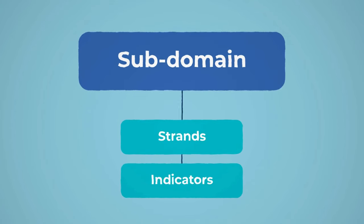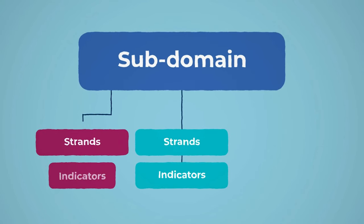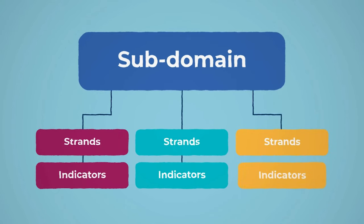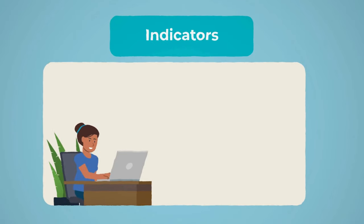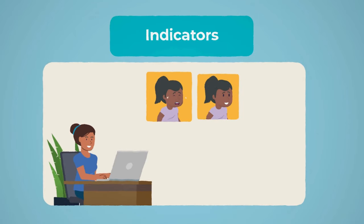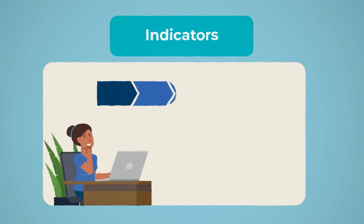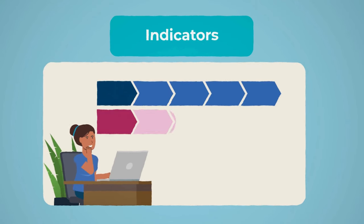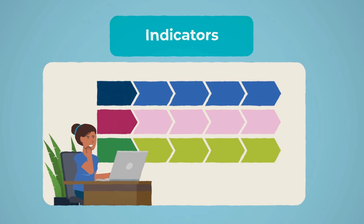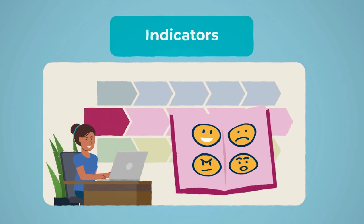Each domain includes subdomains, strands and indicators. Within each subdomain, there are three strands describing the broad capabilities that change over time as children learn and develop. Each strand includes indicators. Indicators describe what you might observe. These indicators help to build an understanding of what comes next and help in planning for that next learning step.